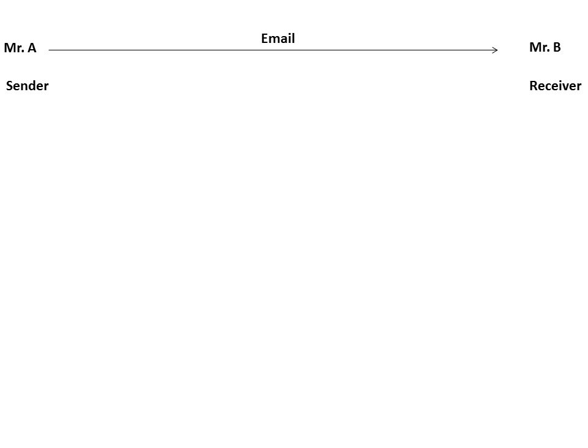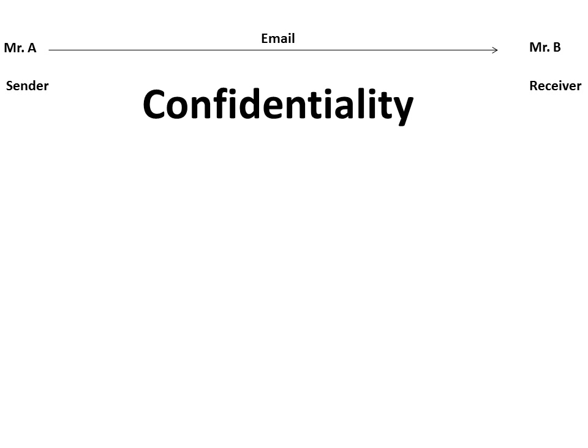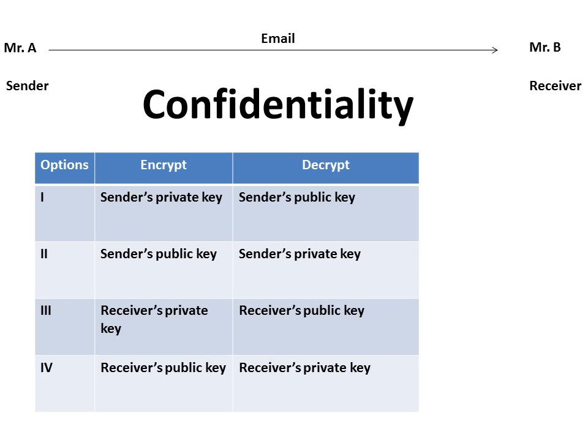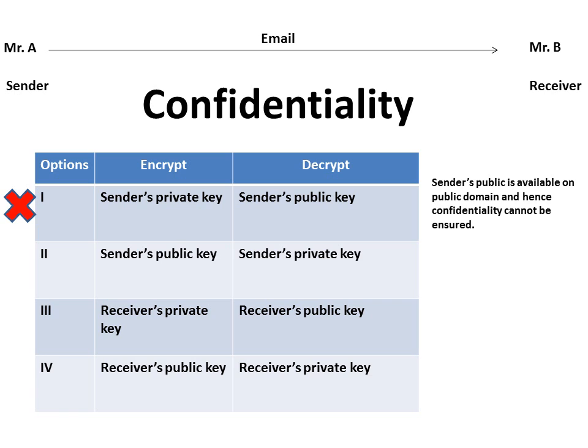Let us take one example. Mr. A wants to send an email to Mr. B, but he wants the email to be confidential. So the objective here is confidentiality. Mr. A will have four options: sender's private key, sender's public key, receiver's private key, or receiver's public key. He cannot use the sender's private key because the sender's public key, which can be used for decryption, is available in the public domain, and hence confidentiality cannot be ensured — anyone can decrypt this particular message.